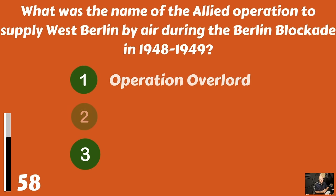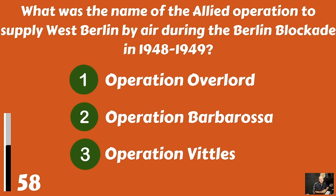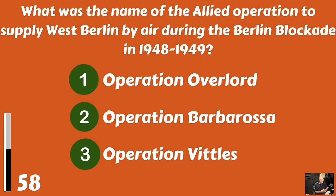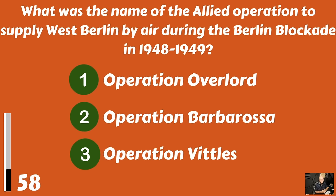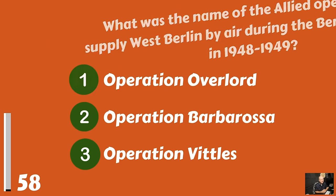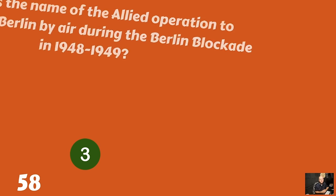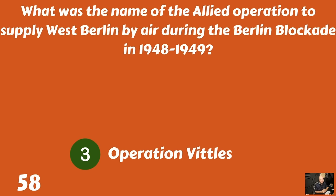What was the name of the Allied operation to supply West Berlin by air during the Berlin Blockade in 1948 to 1949? Operation Overlord, Operation Barbarossa, or Operation Vittles? It was Operation Vittles.